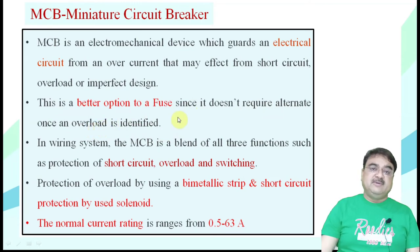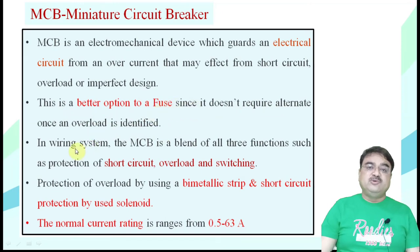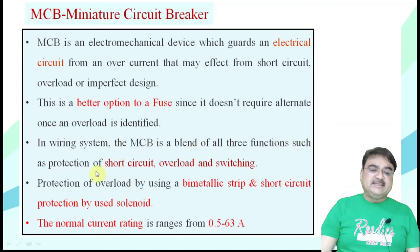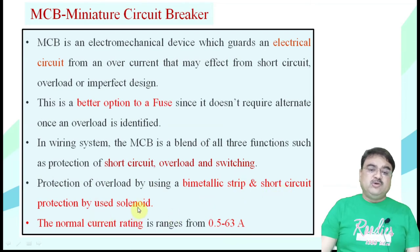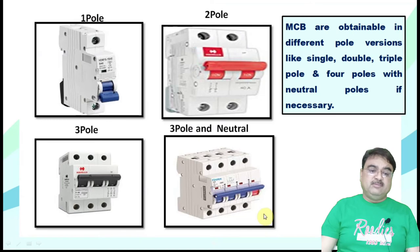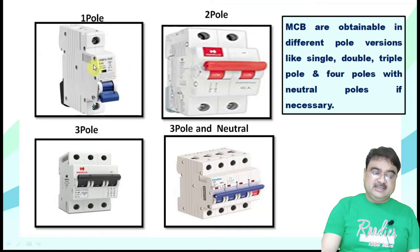An MCB is a better option since it does not require a replacement when an overload is identified — no fuse replacement needed. In a wiring system, the MCB is a blend of three functions: protection against short circuit, protection against overload, and switching. Overload protection uses a bimetallic strip and short circuit protection uses a solenoid. The normal current rating is 0.5 A to 63 A.